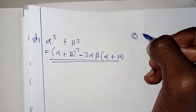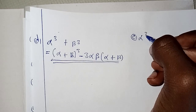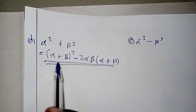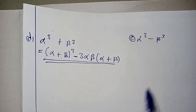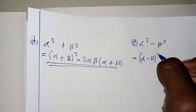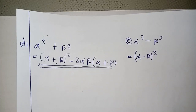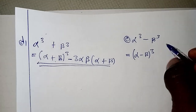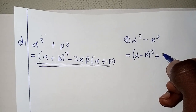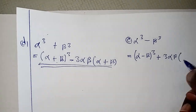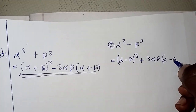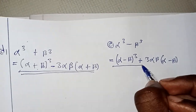Identity E: alpha cubed minus beta cubed. This is the same as identity D except some signs change. It becomes alpha minus beta, times the quantity alpha minus beta squared plus 3 alpha beta. The sign inside changes to negative, giving alpha minus beta.